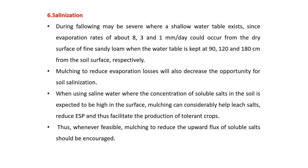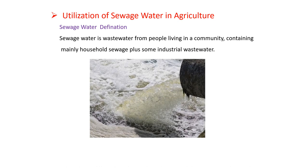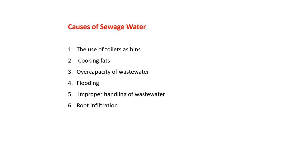That covers the management practices for using saline water for irrigation purpose. Next, the topic is utilization of sewage water in agriculture for irrigation purpose. Sewage water is wastewater from people living in a community, containing mainly household sewage plus some industrial wastewater. Different factors by which sewage water forms include use of toilets, cooking fats, over-capacity of wastewater systems, flooding, improper handling of wastewater, and root infiltration.